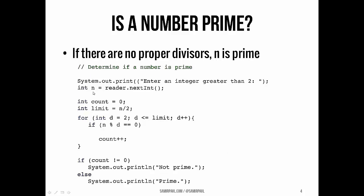We prompt the user for input, and this time we add a counter starting at zero. Our limit is still half of n — that's where we stop looking. We start d at 2 and count up to the limit. If n is divisible by d, this time instead of printing the proper divisor, we add one to the counter. At the end, when d has exceeded the limit, we check whether count — the number of proper divisors — was equal to zero. If it wasn't equal to zero, the number wasn't prime. If it was zero, the number is prime because it wasn't divisible by anything other than one and itself. So again, we have a for loop with an if statement nested inside.